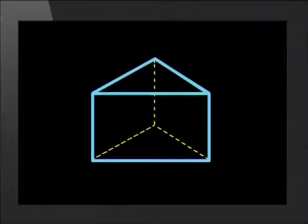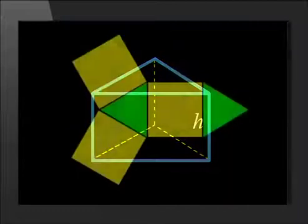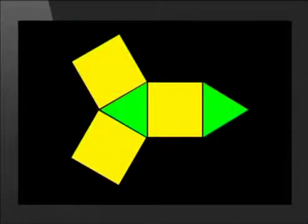A triangular prism has 5 faces: 2 identical triangle faces and 3 rectangular faces. So, if you do not know the formula for the surface area of a triangular prism, just calculate the area of each face of the prism and add them together to get the total surface area.